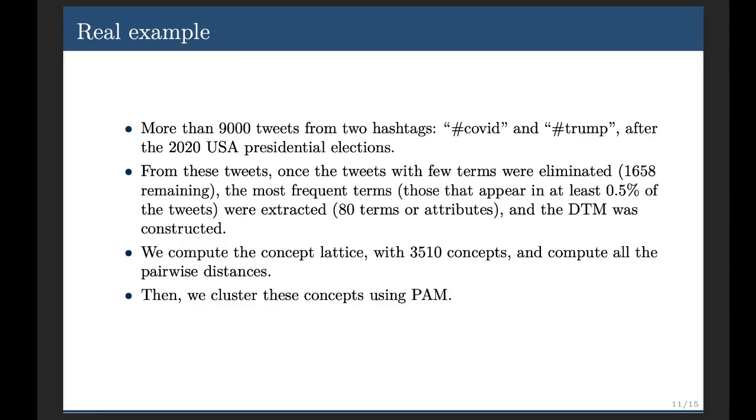From these tweets, first we remove all those tweets with very few terms, with less than 5 terms. And from the more than 160 remaining, we only take the most frequent items. What are the most frequent terms? In this case, those that appear in at least 0.5% of the tweets. In this case, we counted with 80 terms, with 80 attributes.